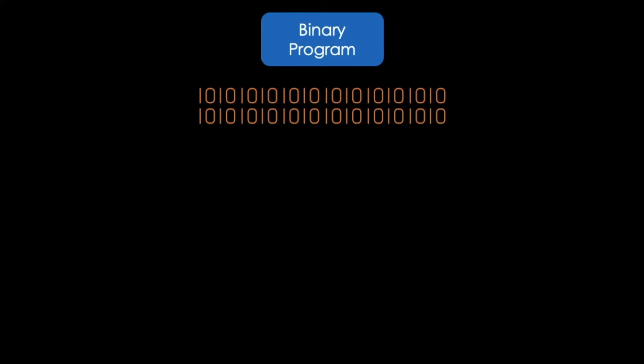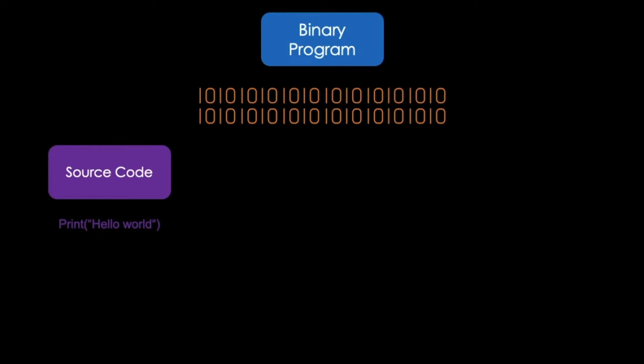A computer program, also called a binary program, only consists of zeros and ones. Since we as humans normally work with higher programming languages, the source code we enter needs to be understood by the computer. It needs to be translated to a machine-readable code.